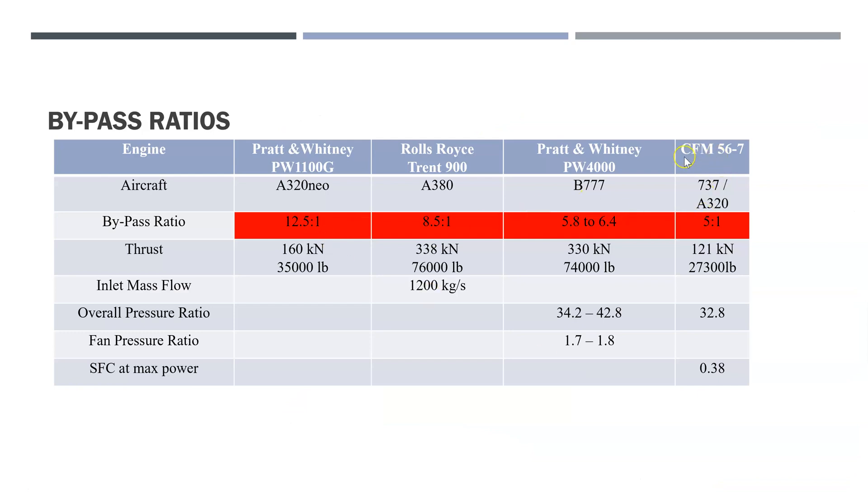If we look at the evolution, if we look at something like the 737 or the A320, that would have had a bypass ratio of 5:1. Boeing 777 bypass ratio, let's say, 6.4:1.